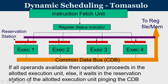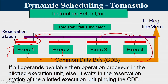If all operands are available, the operation proceeds in the allotted execution unit. If operands are not available, the only way to get them is through the common data bus. Once the data is ready, the reservation station is updated and execution begins. When a functional unit completes, the value is written to the CDB and updates the relevant reservation stations. If all operands are available, operation proceeds in the allotted execution unit; else it waits in the reservation station, monitoring the CDB.